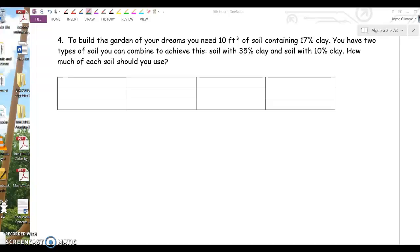To build the garden of your dreams, you need 10 cubic feet of soil containing 17% clay. You have two types of soil that you can combine to achieve this. The first type of soil has 35% clay, and the other type has 10% clay. How much of each soil should you use?